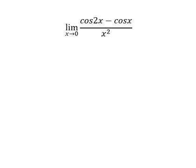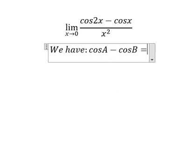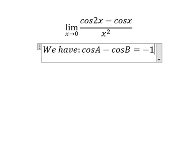Hey guys, welcome back to my channel. Today I want to show you how to find the limit. We have the formula here: cos A minus cos B equals negative 2 sin((A+B)/2) sin((A-B)/2).